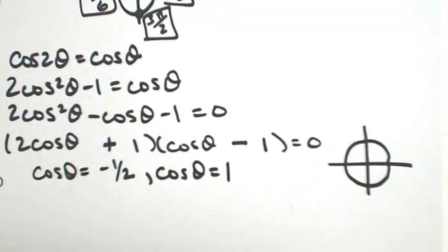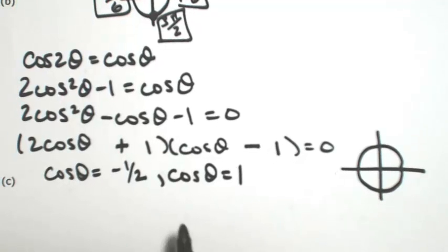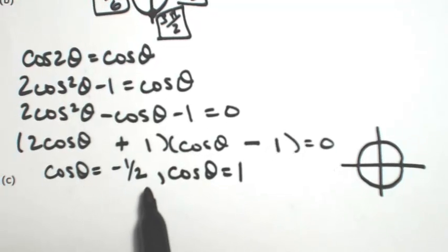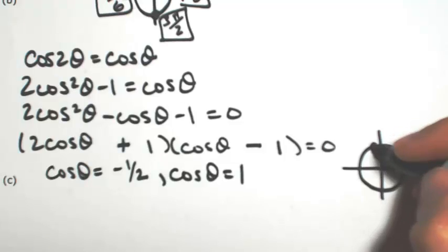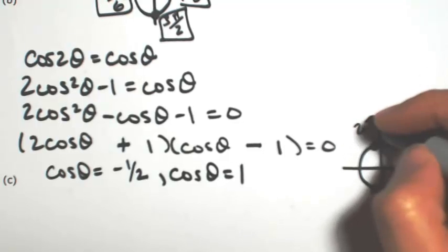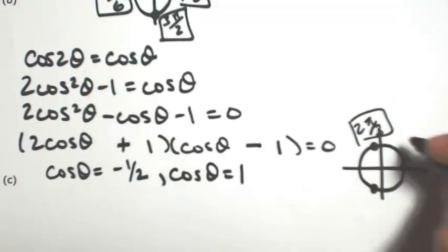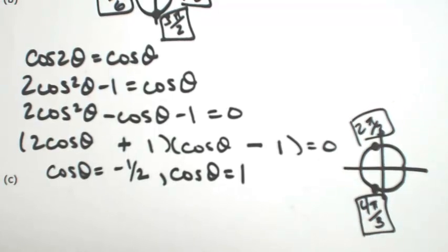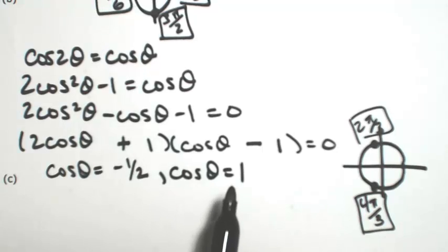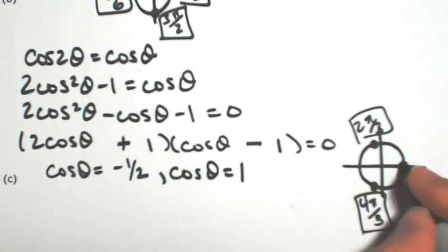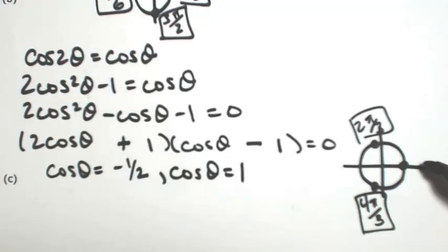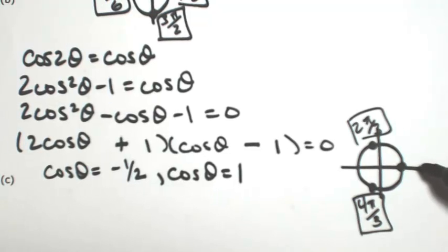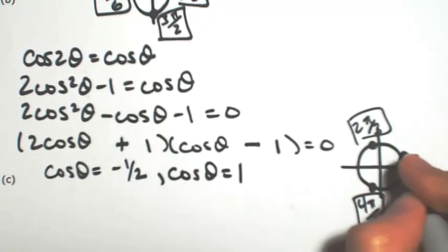So within one revolution of the unit circle, 0 to 2π, cosine is the x coordinate. So where x is -1/2, which is 2π/3 and 4π/3. And also where the x coordinate is 1, which can be considered as 0 or 2π. But based on the restriction, we're not including 2π, so it can only be 0.